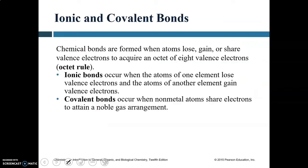Generally speaking, chemical bonds form when atoms either lose, gain, or share valence electrons in order to acquire a so-called octet — eight valence electrons on the outer electron energy level. When atoms achieve the octet on the outermost electron level, they basically gain the noble gas arrangement of that outer shell, which makes them very energetically stable.